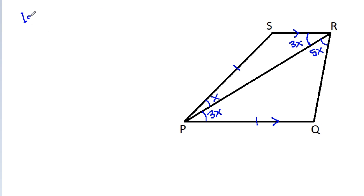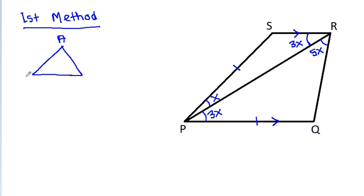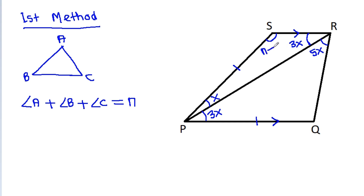Now, first method. In any triangle A, B, C, angle A plus angle B plus angle C is equal to pi. So this angle will be pi minus x plus 3x, that is 4x, and this angle will be pi minus 3x plus 5x, that is pi minus 8x.